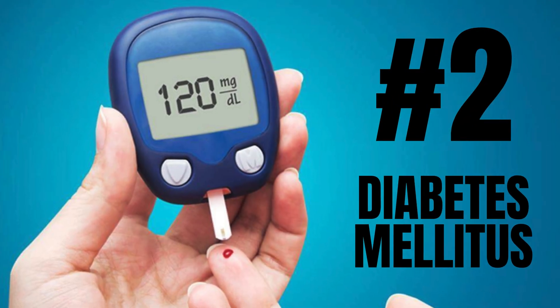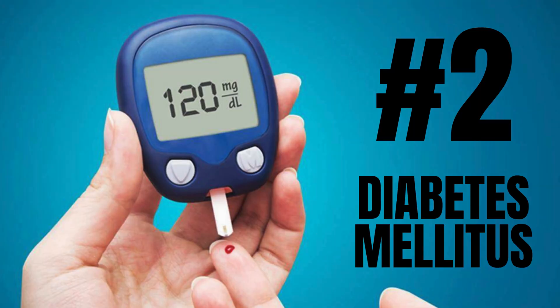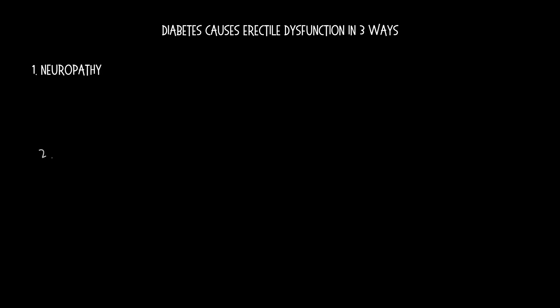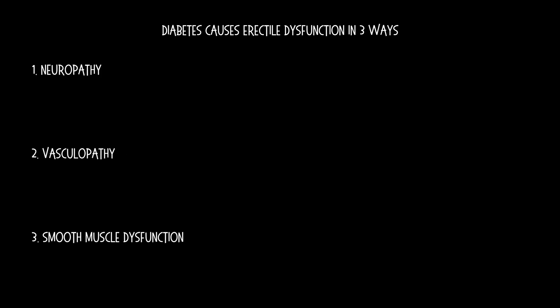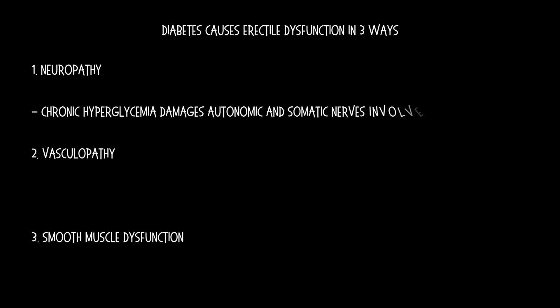Number 2: Diabetes mellitus. Diabetes causes erectile dysfunction in three main ways—neuropathy, vasculopathy, and smooth muscle dysfunction. In diabetic neuropathy, chronic hyperglycemia damages autonomic and somatic nerves involved in erection.